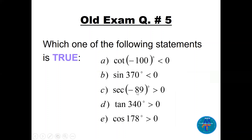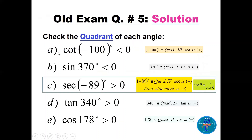Next is a multiple choice question: which statement is true? For option A: cot(-100°) — since -100° lies in Quadrant 3, cot is positive, so 'cot(-100°) < 0' is false. For option B: sec(-800°) — -800° lies in Quadrant 4, cosine is positive there, so secant is positive. That statement is correct.